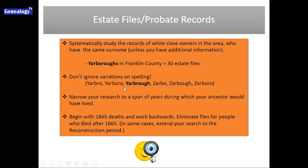You have to include anything that sounds like the same name, or any different spellings you've found in records of your ancestor after 1870. Sometimes it was transcription interpretation, and sometimes that was actually the way the family spelled it but they really were related. You also want to narrow this research to a span of years during which your ancestor would have lived. If your ancestor was born in 1850, don't look at estate files from 1830 — don't do work you don't have to do.